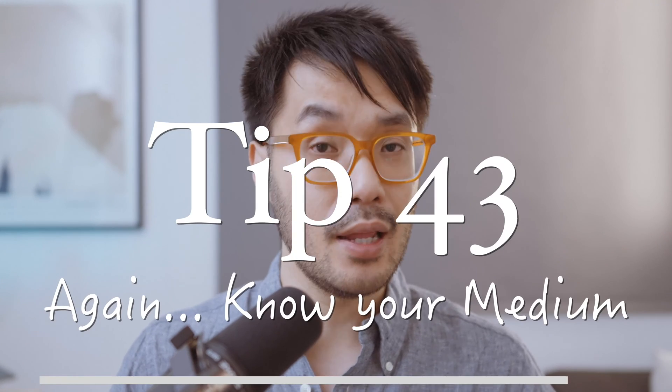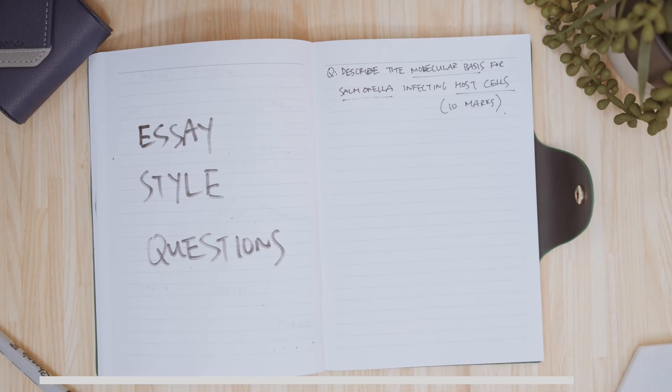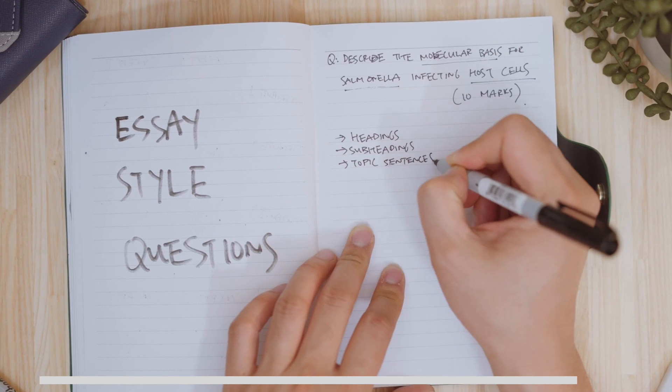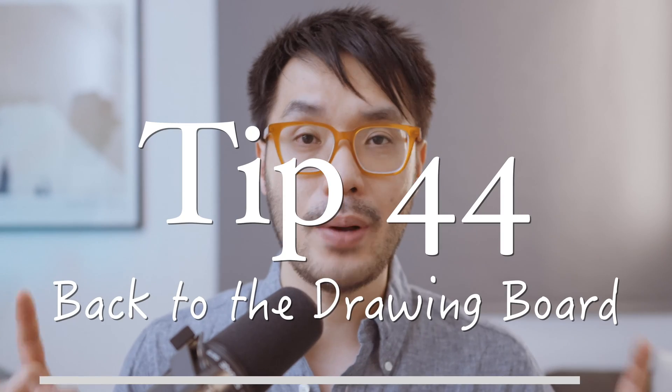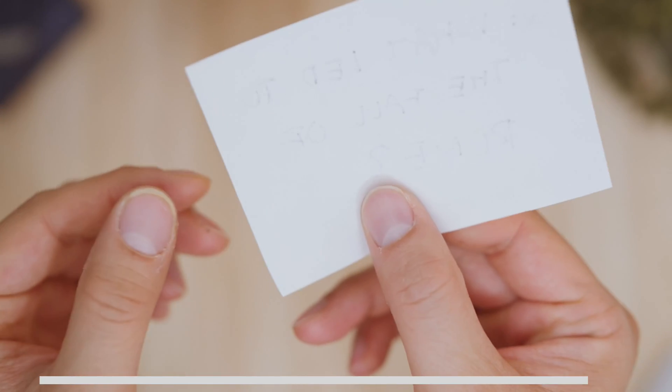Tip 43: again, know your medium. If it's an essay-style or problem-solving question, then you're being assessed on how you can construct a cohesive piece of argumentative writing. Dot points won't work here, and you'll need headings, subheadings, topic sentences, summaries, conclusions—you need to know your medium. Tip 44: back to the drawing board. For essays or problem-solving questions, simple revision questions in your test bank won't work. The answers to open-ended philosophical topics or scenarios won't be one-word answers that can fit on a flashcard. It's much higher up on Bloom's Taxonomy—we need to apply, analyze, and evaluate.